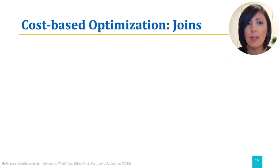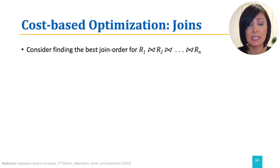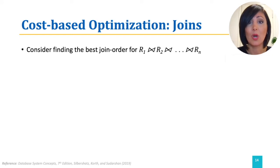On the other hand, the number of different ways we can perform the join is also quite large. Consider the general case of joining n tables R1 to Rn. There are (2(n-1))!/(n-1)! different join orders possible for this simple case. This number is huge.